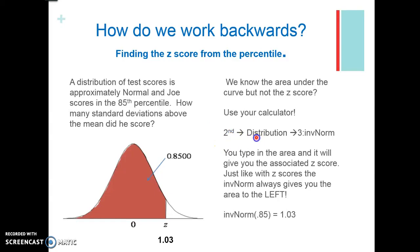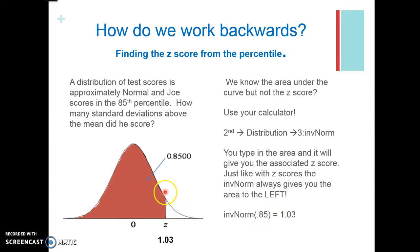In the same place, hit second VARS which is distribution, and go down to number three where it says inverse norm. Inverse norm means you're giving the calculator the area and it's going to give you the Z score. After selecting inverse norm, type in the area and it will give you the associated Z score. Just keep in mind that inverse norm always gives you the area to the left. So if you type in inverse norm of 0.85, that says 0.85 is everything below the Z score. The answer is 1.03 as your Z score.